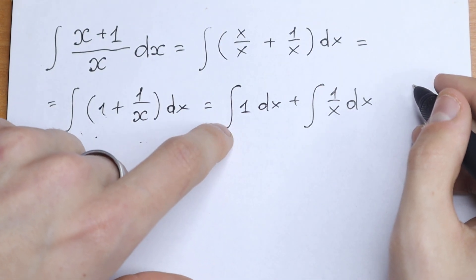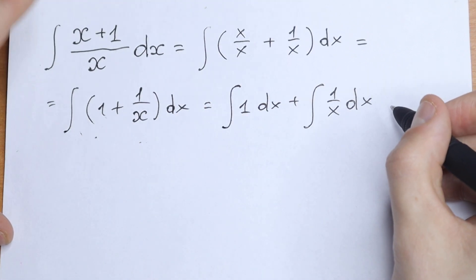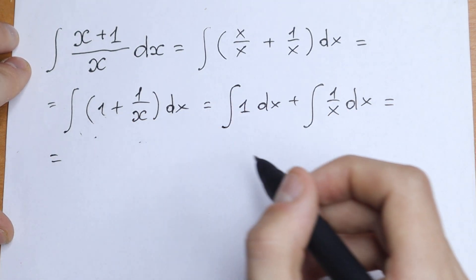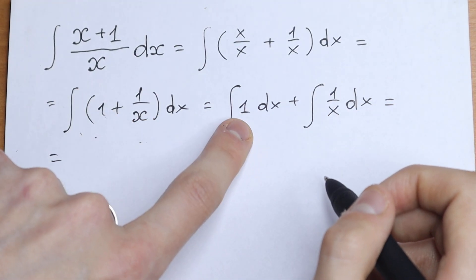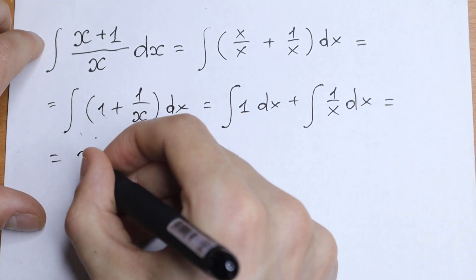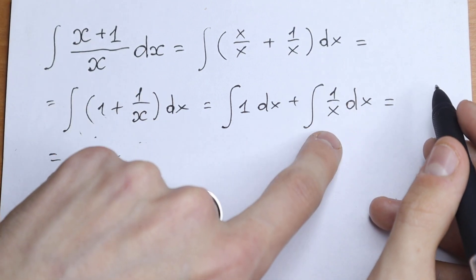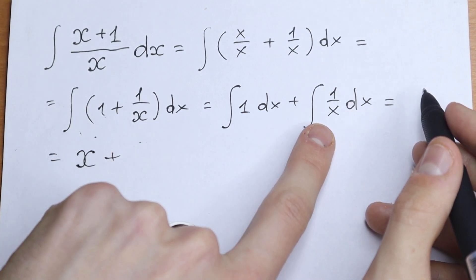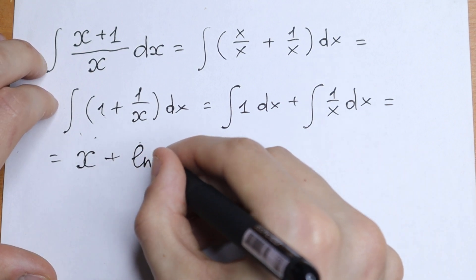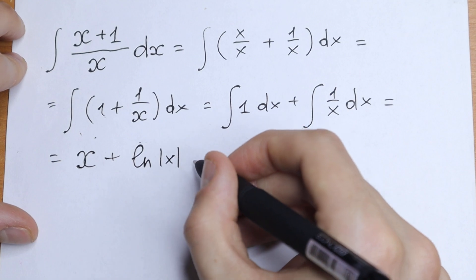We can easily integrate both terms because these are classic table cases. The integral of 1 dx is simply x. And the integral of 1/x is the natural log of the absolute value of x. So the final answer is x + ln|x| + C.